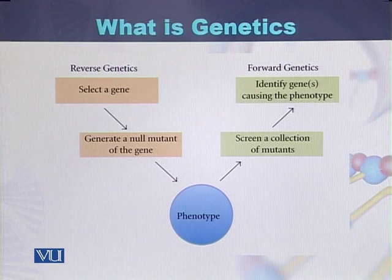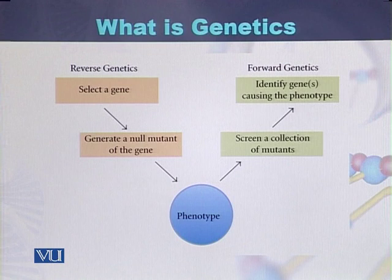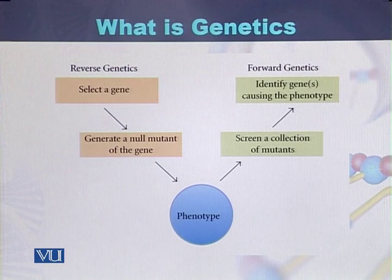In forward genetics, a geneticist or researcher first identifies the phenotype. Then, based on the phenotype, certain mutants or genes are screened, and ultimately a particular gene is identified that is causing the mutation or is responsible for a specific phenotype.